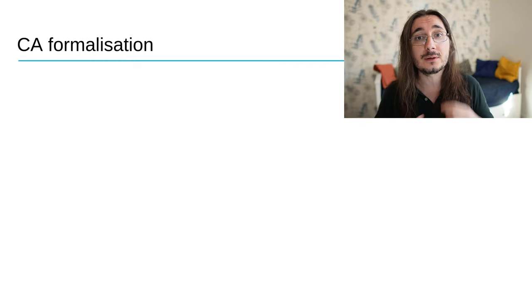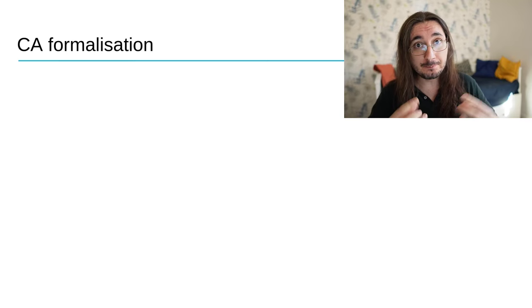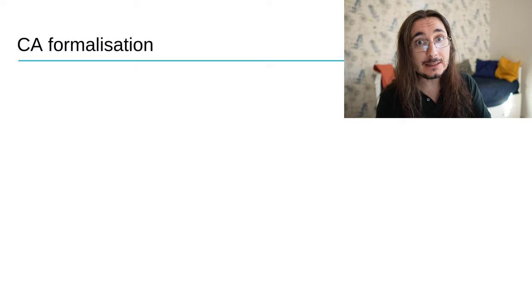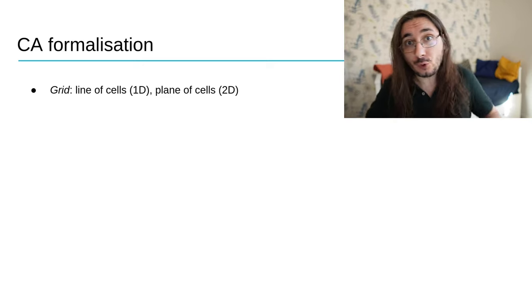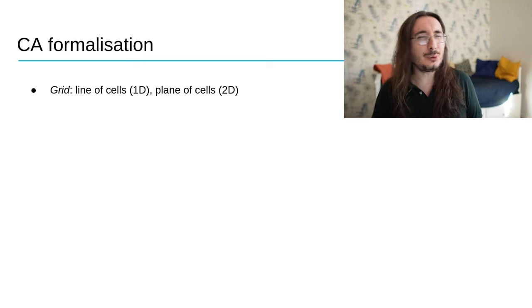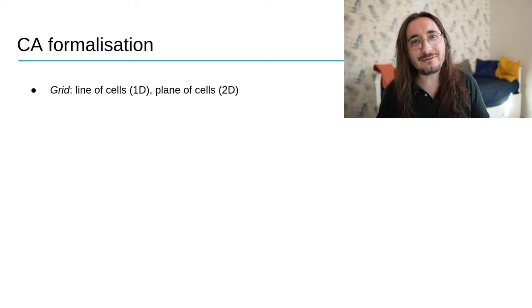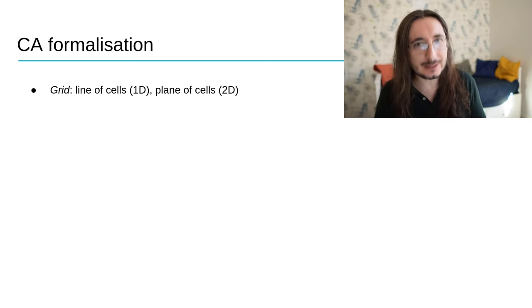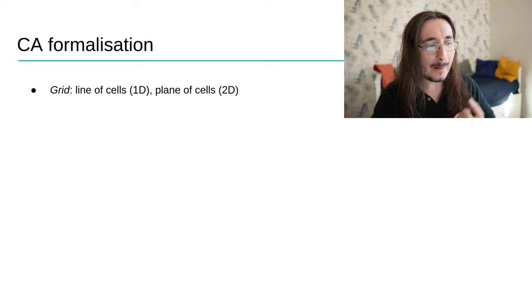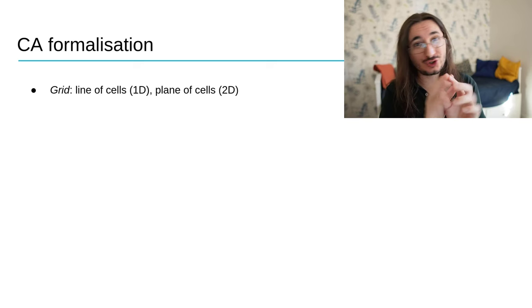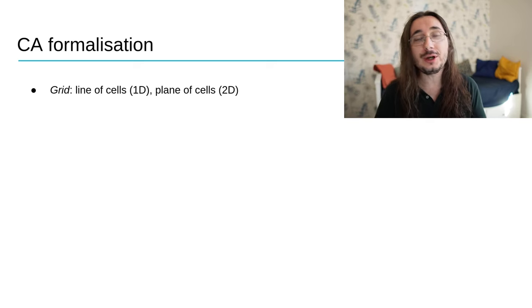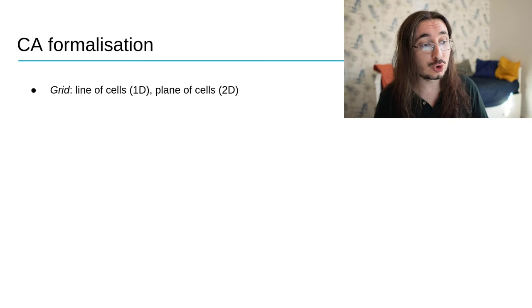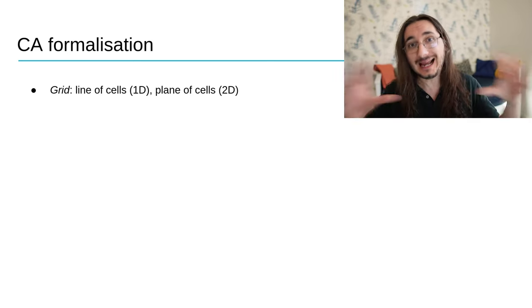We should ask ourselves what are the different components that make up a cellular automata and that define it. The first one, of course, is the grid. And the grid actually can have different dimensionalities. Typically, you have one-dimensional cellular automata, and this is just a line of cells, or you have two-dimensional cellular automata. And in this case, you're going to have an actual grid, so a plane of cells.